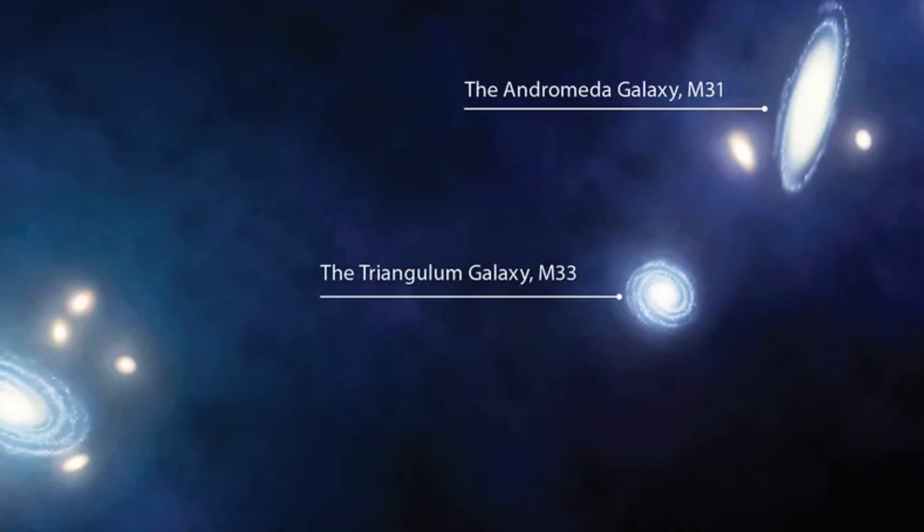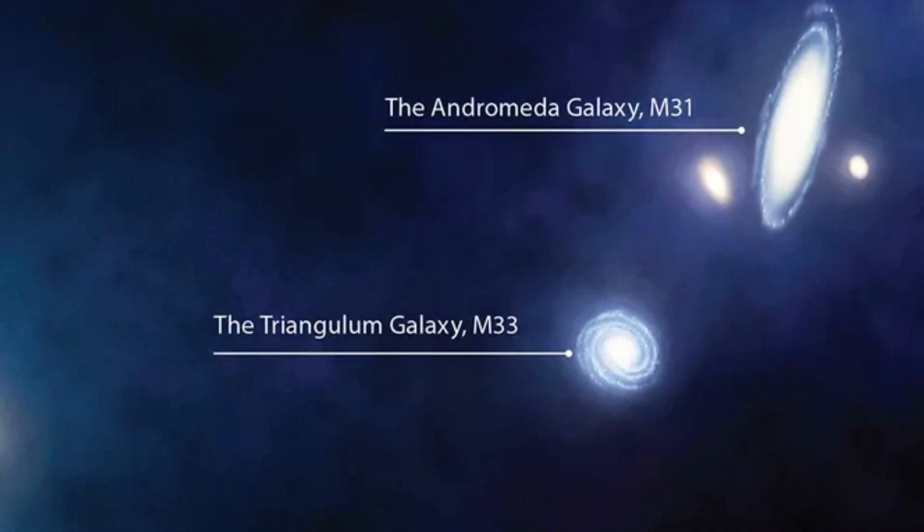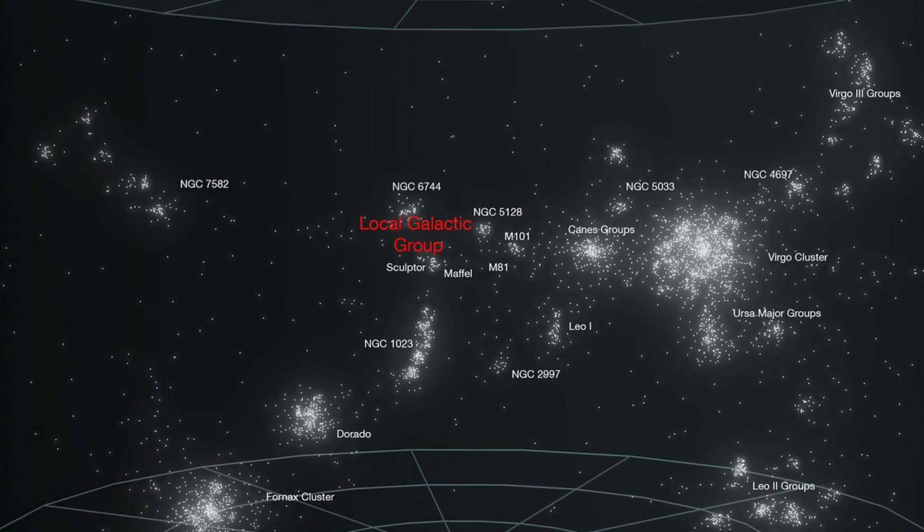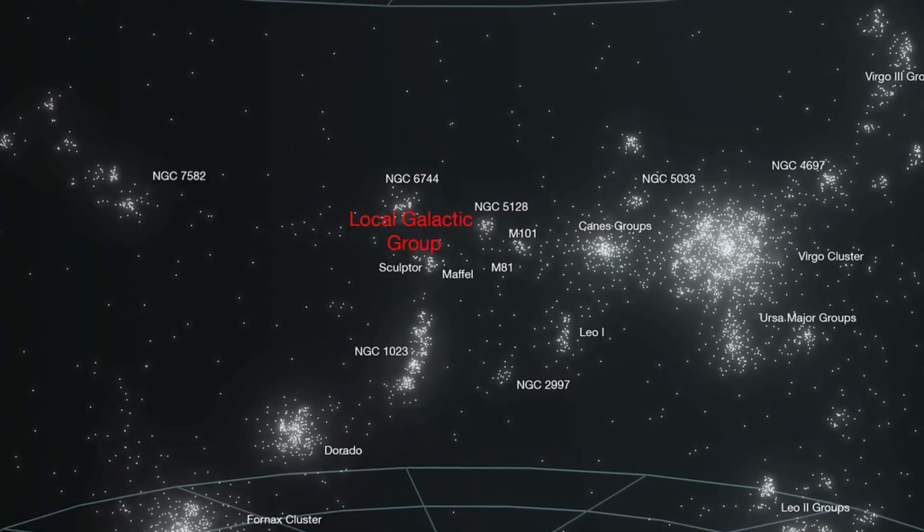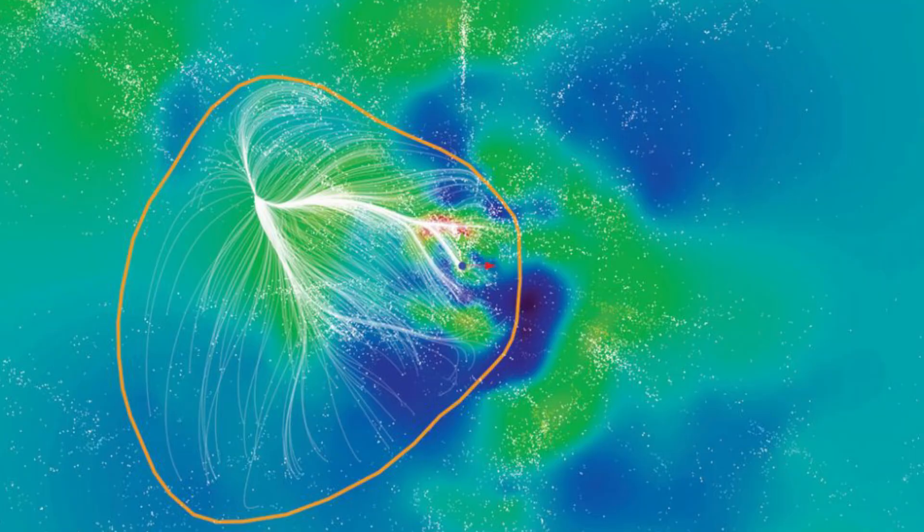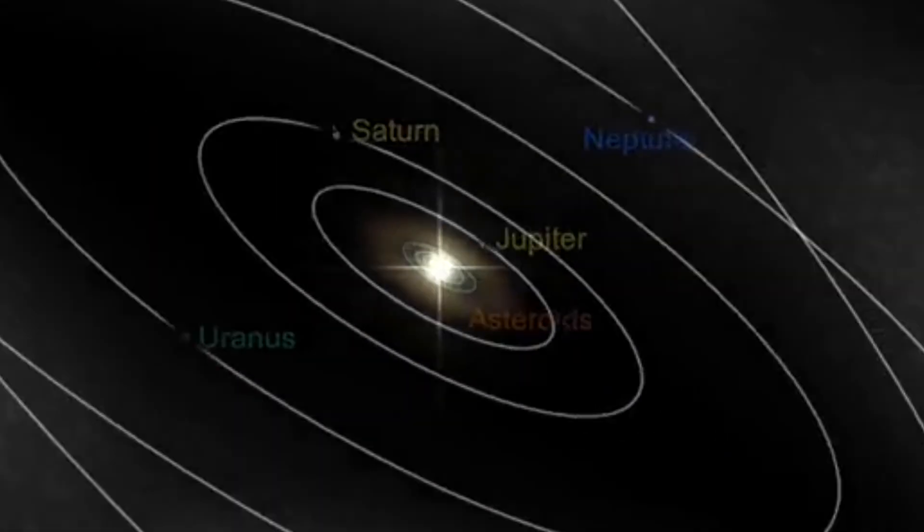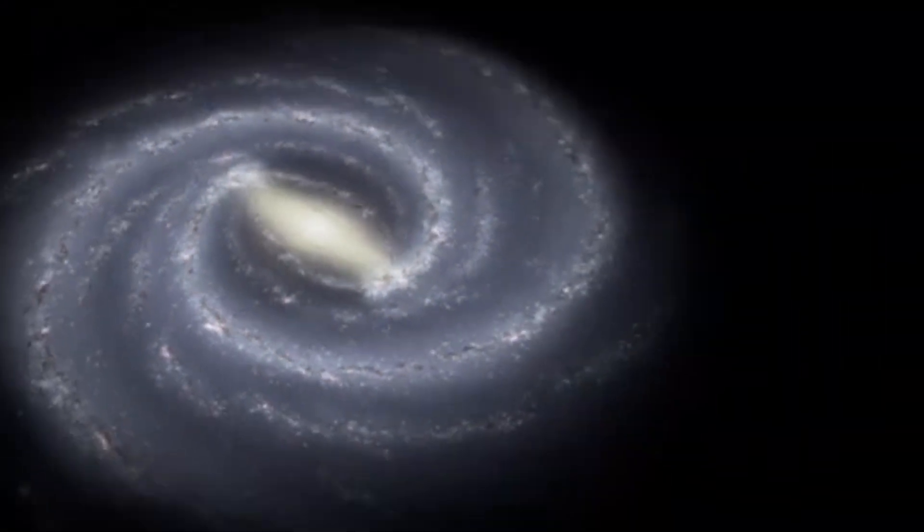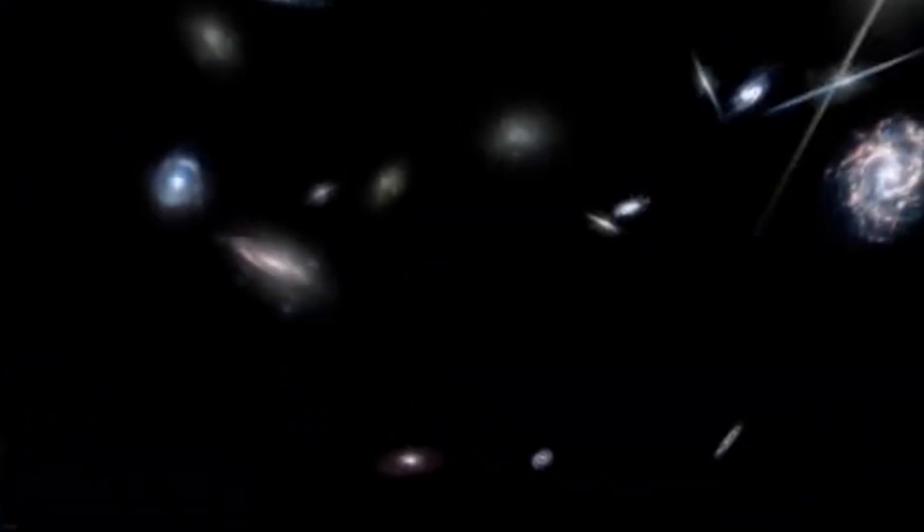The bigger cosmic picture. Andromeda and the Milky Way are the two dominant galaxies of the local group, a small cluster of about 80 galaxies. Beyond them lies the Virgo supercluster, then the Laniakea supercluster, a network of 100,000 galaxies. And Andromeda is part of that immense cosmic web. It's like two giant cities, Milky Way and Andromeda, floating side by side in a vast dark ocean, filled with tiny islands, dwarf galaxies.